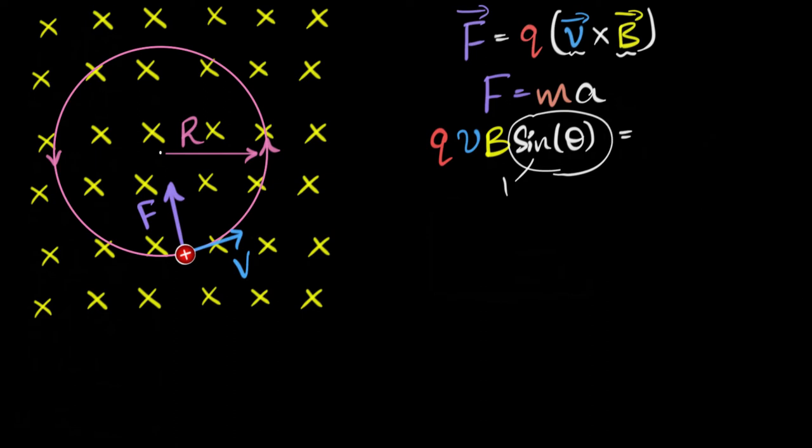That equals mass times acceleration, mass is M. What is acceleration? This is the centripetal acceleration, right? Acceleration is towards the center. And therefore, centripetal acceleration, I hope you remember the formula, that's V squared over R. And that's where the R comes, V squared over R. And now we can just do the algebra. So one V cancels out, and if I just rearrange, I'll get this to be M V divided by Q times B. And there we go. We have the expression for our radius.